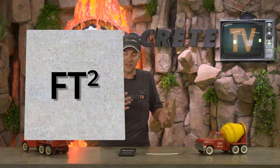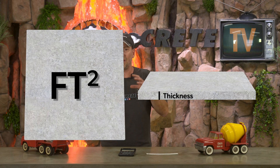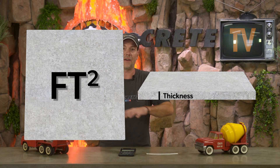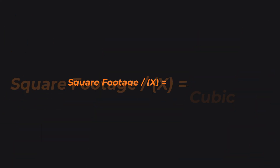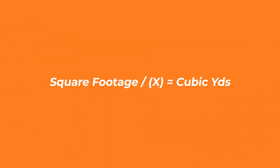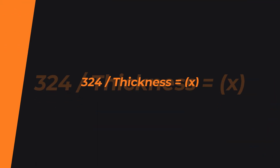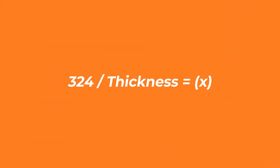So the main points, real quick: you always need to know the square footage of the slab and the thickness of the concrete you're planning on pouring before you can figure out how much you need. The easiest way to calculate this is to divide your square footage by the right divider number, which you can easily figure out on your own using the 324 formula or look up online.